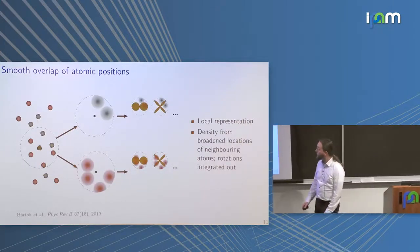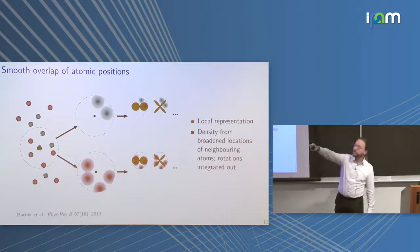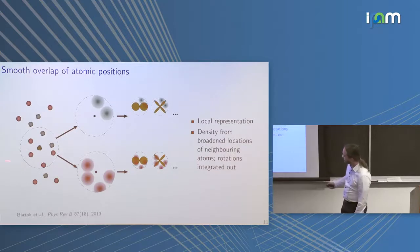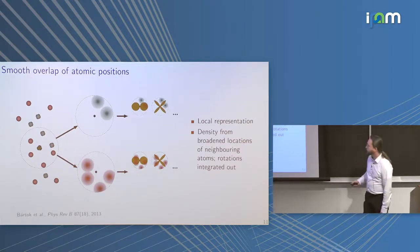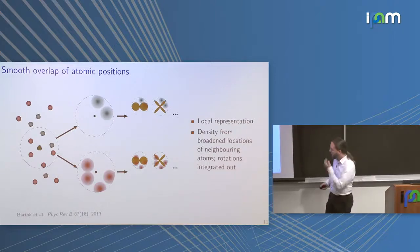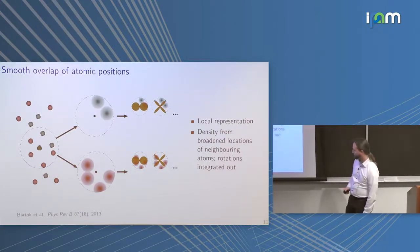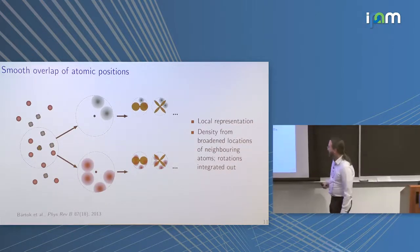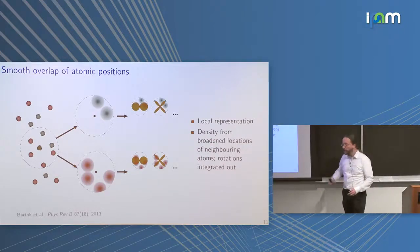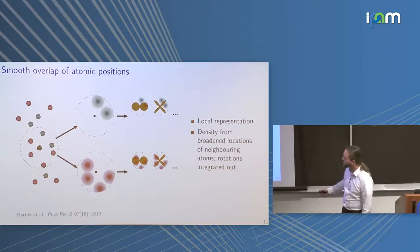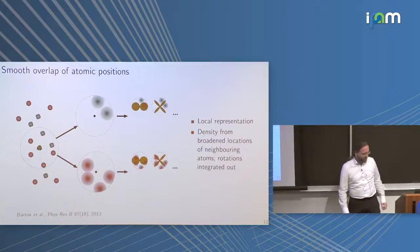Then there is the Smooth Overlap of Atomic Positions (SOAP), introduced by Gabor Csányi, who is here in the audience. It is again a local representation — atoms in their environment — where you place Gaussians on the atoms, choose a basis such as spherical harmonics, and integrate out rotations. You can compute either a kernel or the actual features like a power spectrum. It is another way to describe local environments but with a different choice of basis functions.